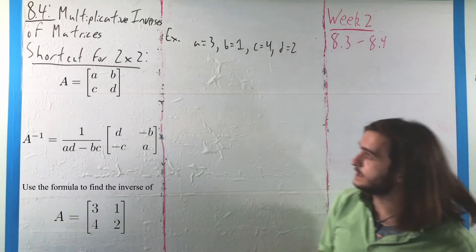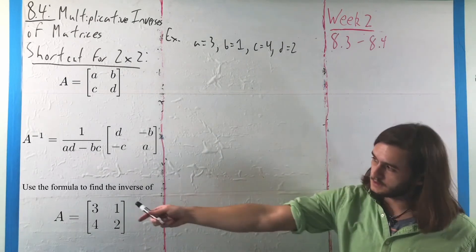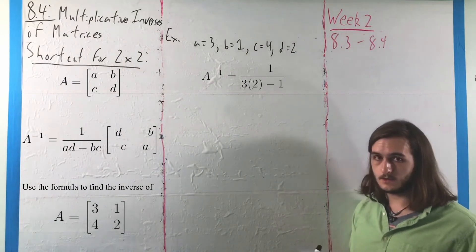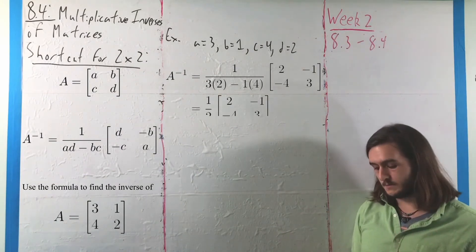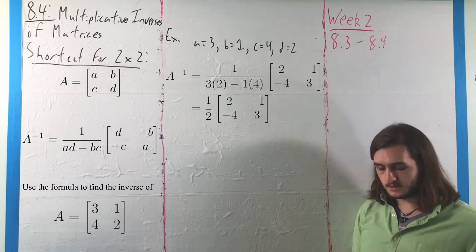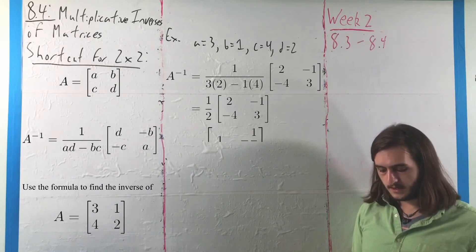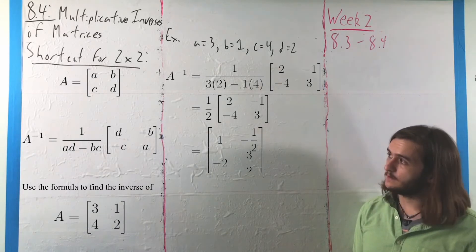So if we take that, we can plug those pieces into our formula over there, like so. And then from there, it's just a scalar multiplication into a matrix, which will leave us with 1, negative 1 half, negative 2, 3 halves.